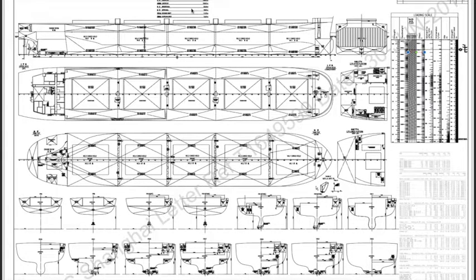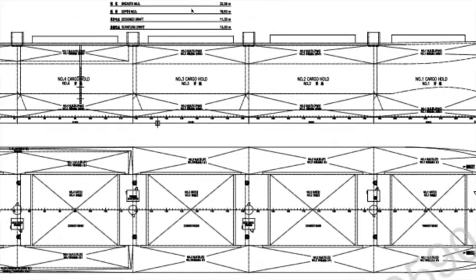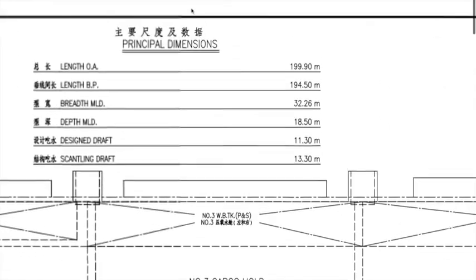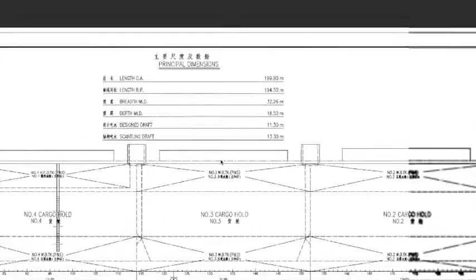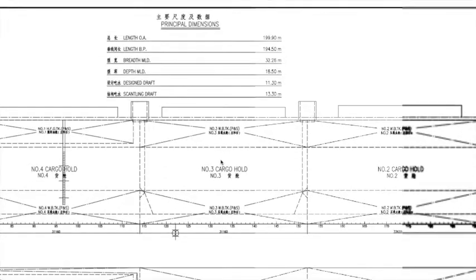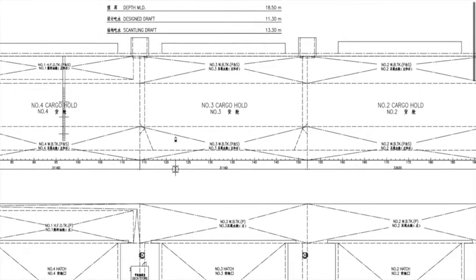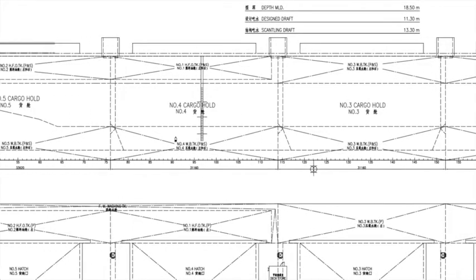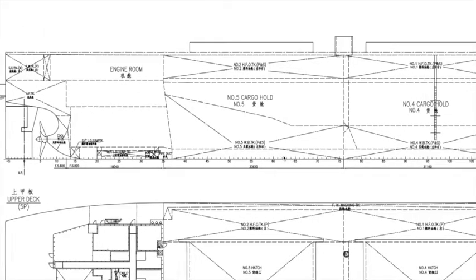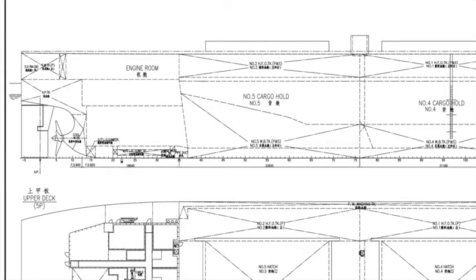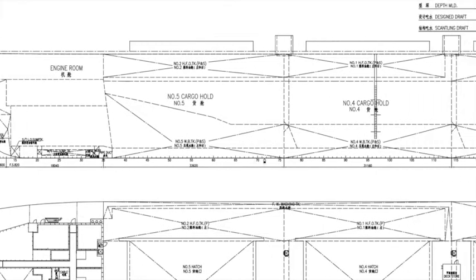Starting from the top, we have the principal dimensions of the vessel. I will not spend much time here because you know the general layout of the vessel and what information you will be getting. Let's scroll quickly and see the information being provided in the location of all the tanks.